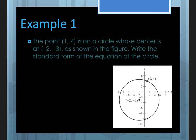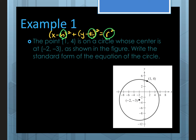Example one: a point (1, 4) is on a circle whose center is at (−2, −3). Write the standard form of the equation. Start by writing out the standard form. We already have (h, k), so h is −2 and k is −3. So x minus negative 2 becomes x plus 2 squared, and y minus negative 3 becomes y plus 3 squared equals r².